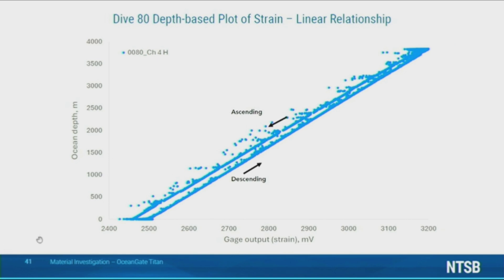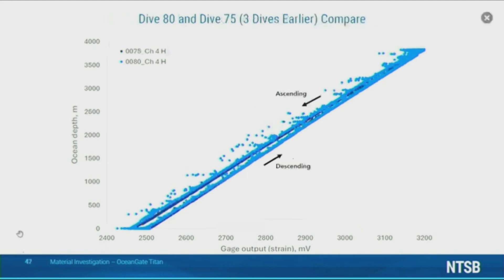For dive 80, prior to the event, the relationship between strain and dive depth was a straight line for both the descent and the ascent. Going backwards in time by three dives and comparing dive 80 to an earlier dive 75 reveals no significant change from dive to dive.